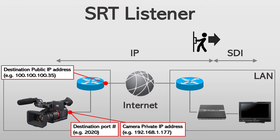As you can see in the diagram, I set up the receiver to pull the SRT streaming from the camera via the Internet. The public IP address 100.100.100.35, the private IP address 192.168.1.177, and the port number 2020 are examples. Just as a side note, in this configuration, I set port forwarding on the camera side's router. More specifically, the router in the camera side's network forwards the commands that come to port 2020 to the camera, which has a private IP address 192.168.1.177.